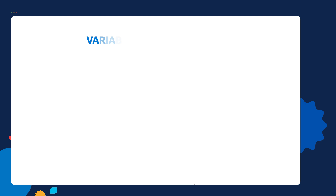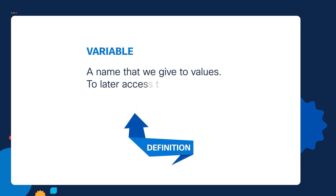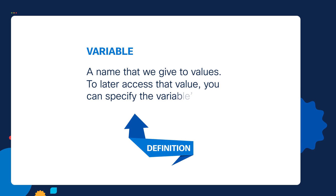So what is a variable? In Python scripts, a variable is a name that we give to values. To later access that value, you can specify the variable's name.